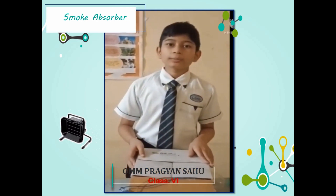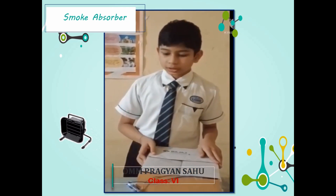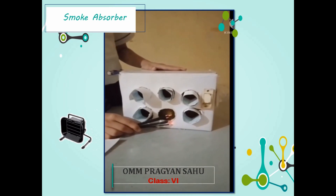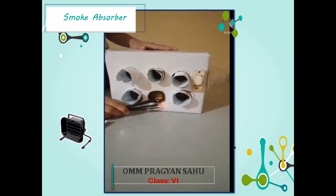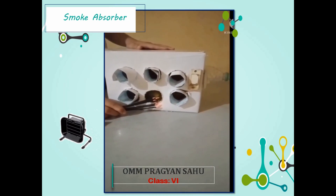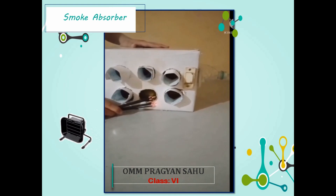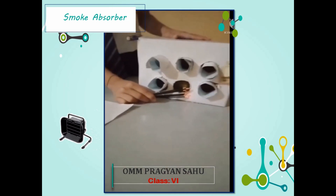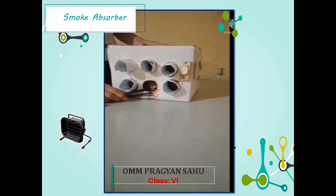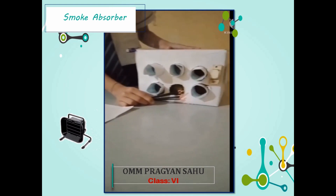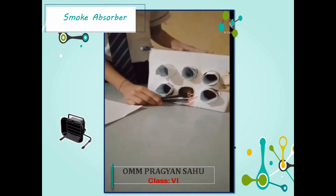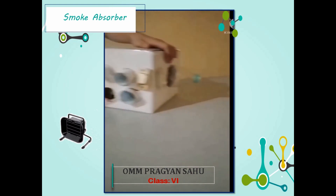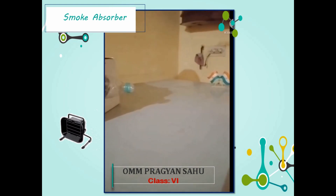Let us see how the smoke absorber works. When I hold these lit incense sticks, they give out a lot of smoke. The smoke is absorbed by the fan inside, drawn in through the holes and thrown out from the other end.